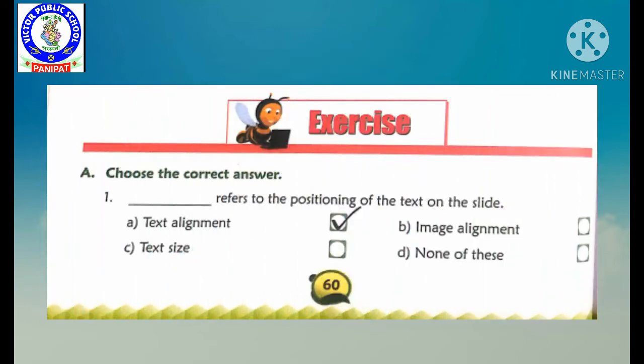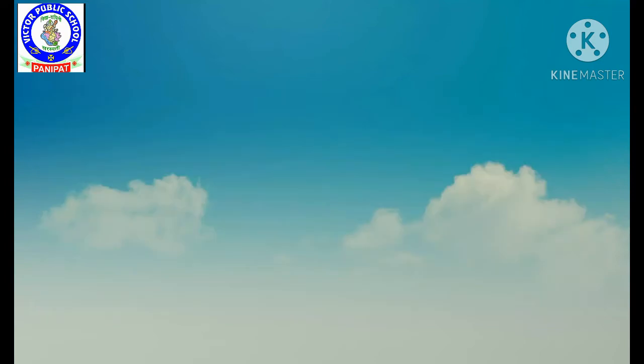First is: dash refers to the positioning of the text on the slide. Slide pe text ki position ko kya kehte hain? Our options are text alignment, image alignment, text size, or none of these. We will tick A, text alignment, because text alignment refers to the positioning of the text.